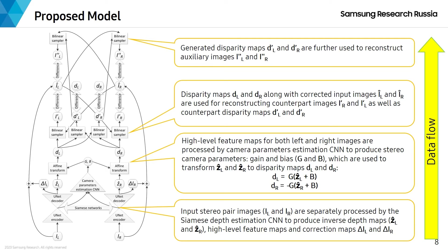We motivate the introduction of correction maps by the observation that in unsupervised monocular depth estimation approaches training on stereo pairs, the self-supervision by opposite view reconstruction, while being highly efficient in learning reasonable depth maps at earlier training stages, at later stages becomes to some extent counterproductive when trying to find geometric explanation for differences in left-right views of a stereo pair actually arising from non-geometric reasons.